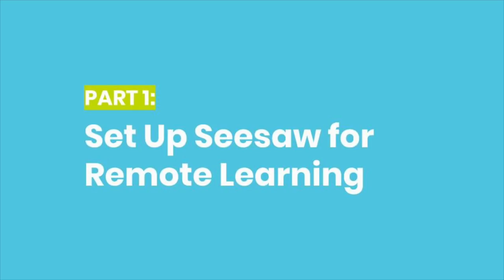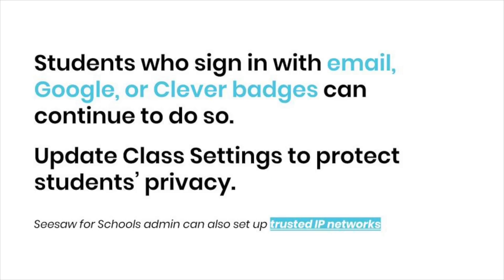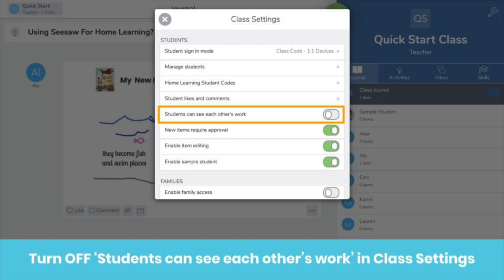Alright, let's get students set up for remote learning. If your students sign in with email or Clever, they can continue to log in this way at home. You will need to update your privacy settings to protect student privacy while they're working outside of the classroom. In class settings, scroll down to the student section and turn off 'Students can see each other's work.' You'll know it's turned off if it's gray, not green.